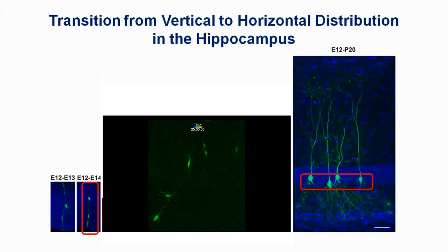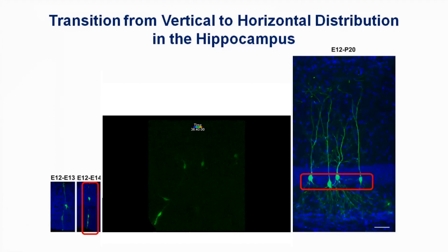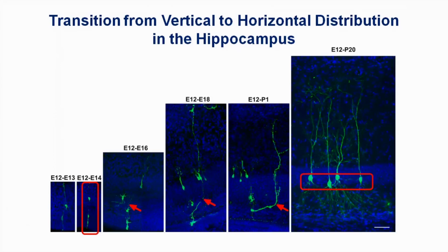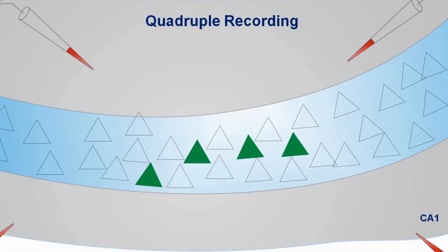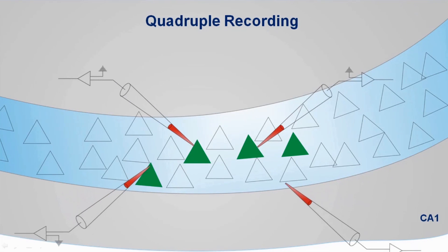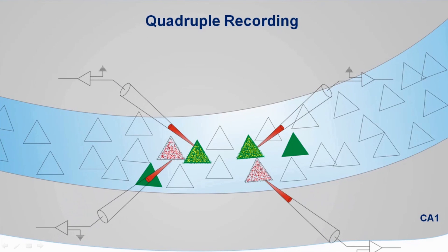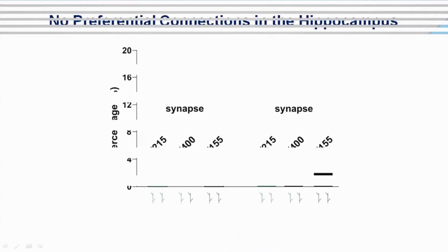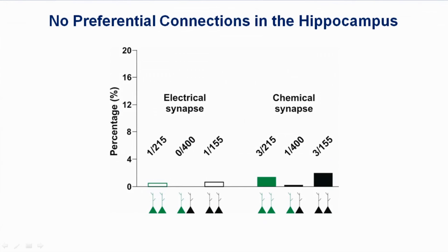Given that sister pyramidal cells form local clusters in the hippocampus, we asked whether they preferentially develop synapses with each other, similar to sister cells in the neocortex. To address this, we performed quadruple whole-cell patch clamp recordings from hippocampal slices, and found that there are no preferential connections between them.